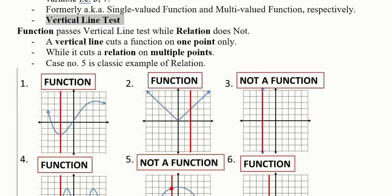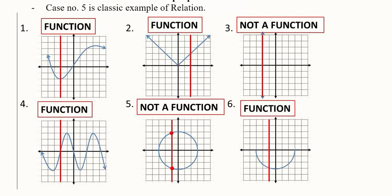We draw a function and also draw a vertical line on it. If it is a function, the vertical line will intersect it at only one point; if it is a relation, it will intersect at multiple points. Consider the first case — this is a function, and this red line is the vertical line. The test is conducted on the basis of it intersecting the function at only one point.